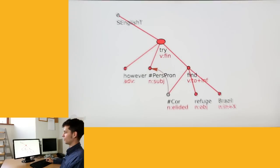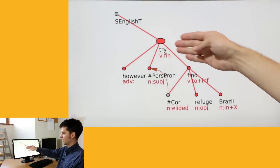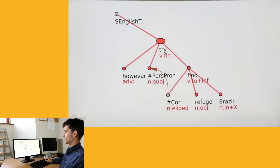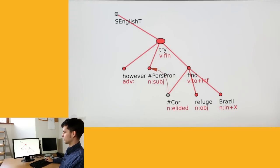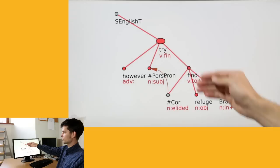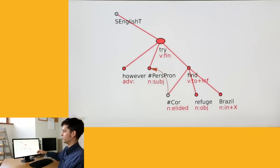We then move to the deep level of syntax, where it's no longer words, but rather concepts that have their nodes in the representation. And also things like pronoun coreference are formally captured, so that we know that the person who was trying was the same one who was trying to find the refugee in Brazil.